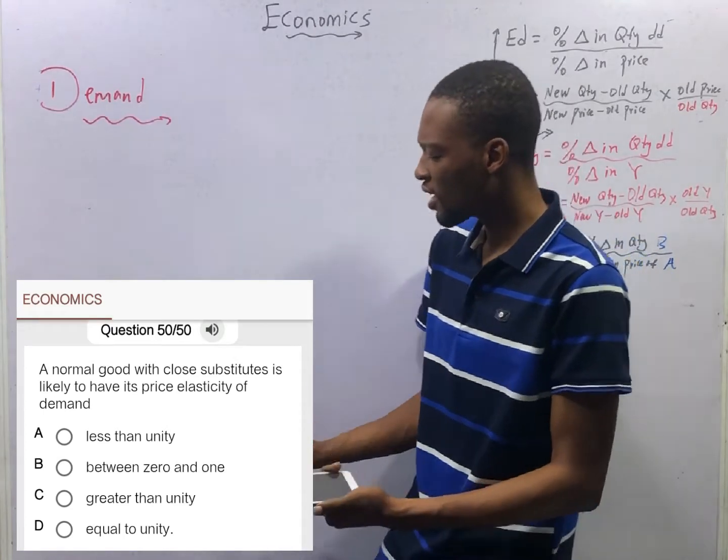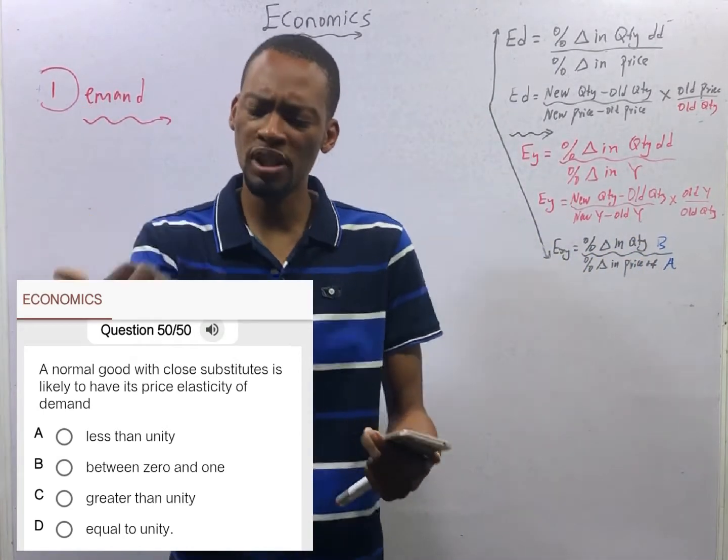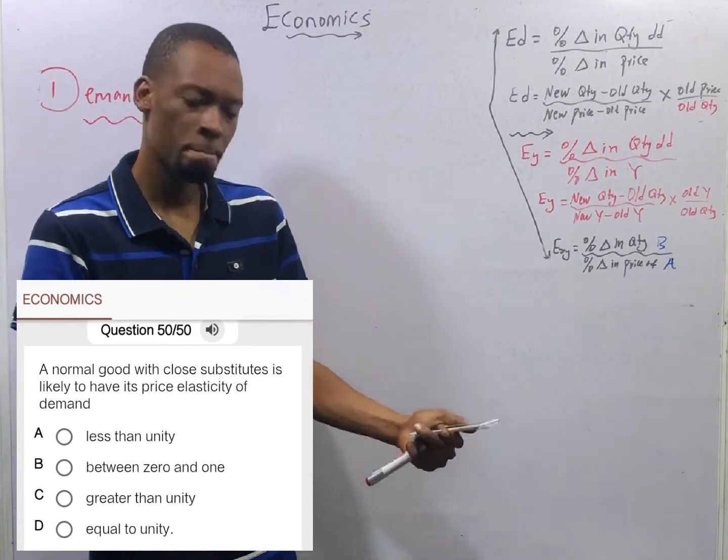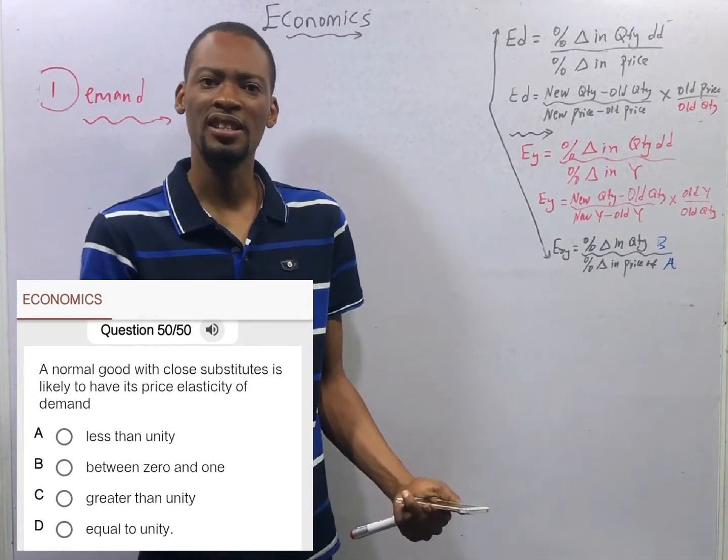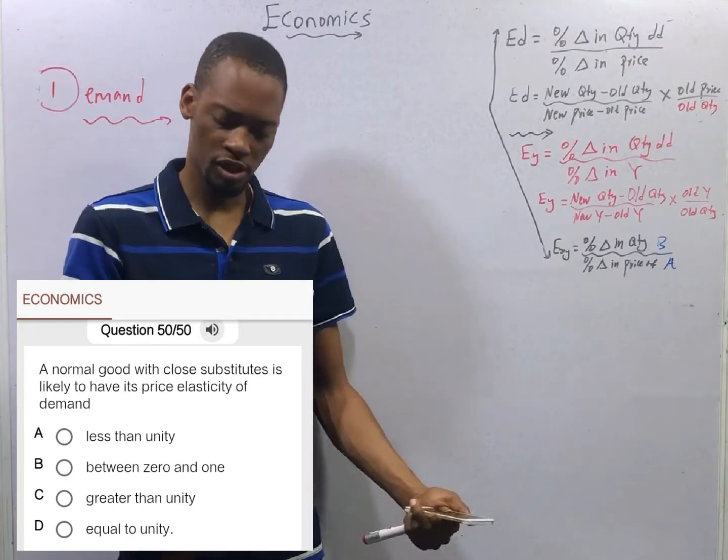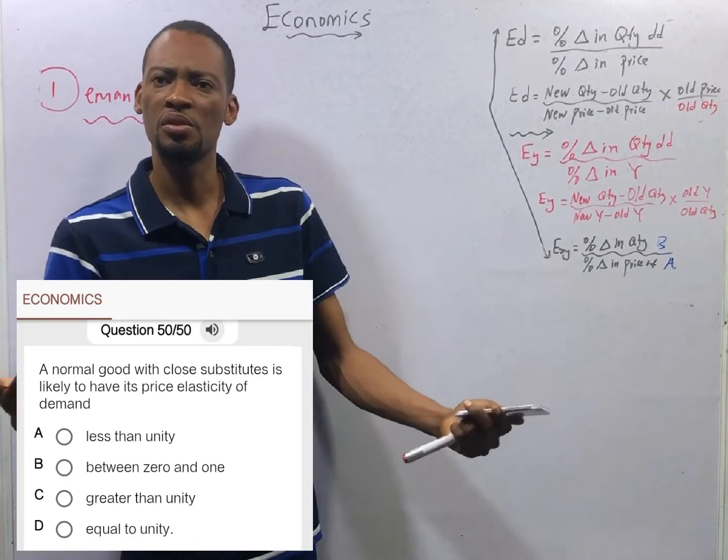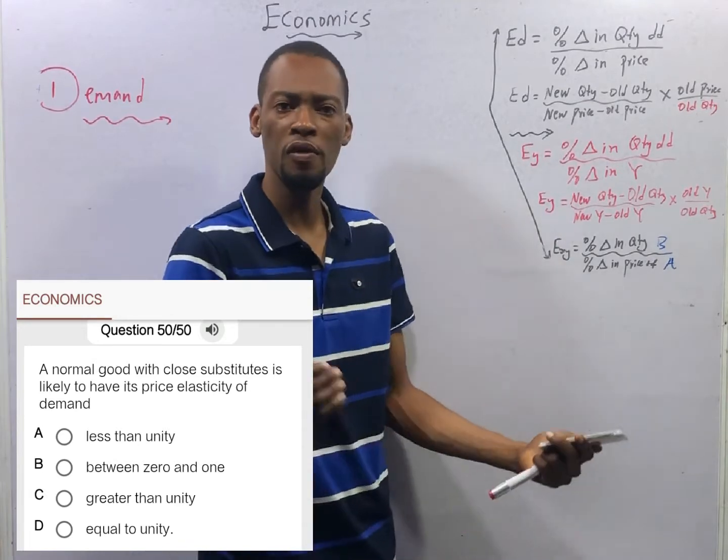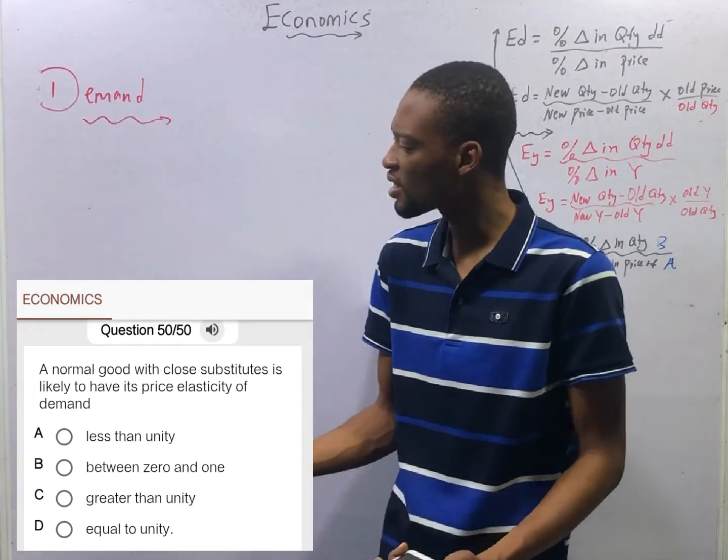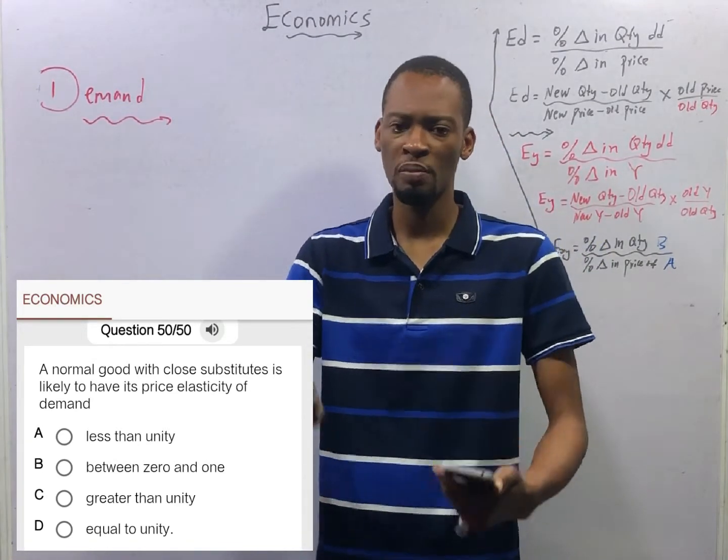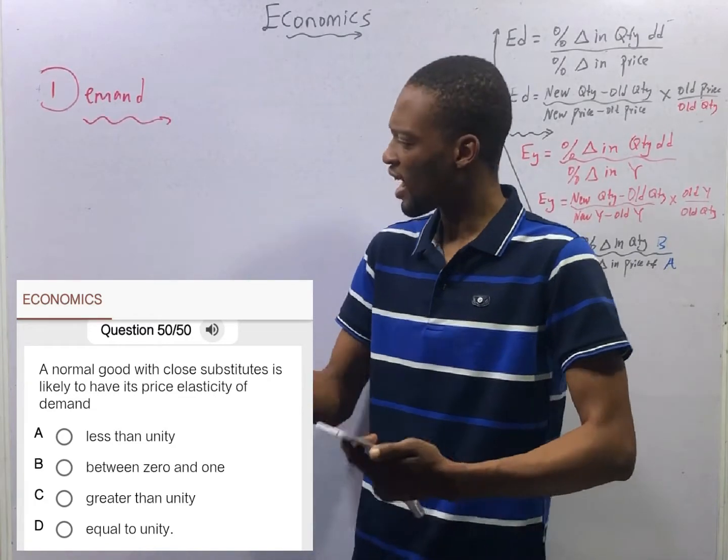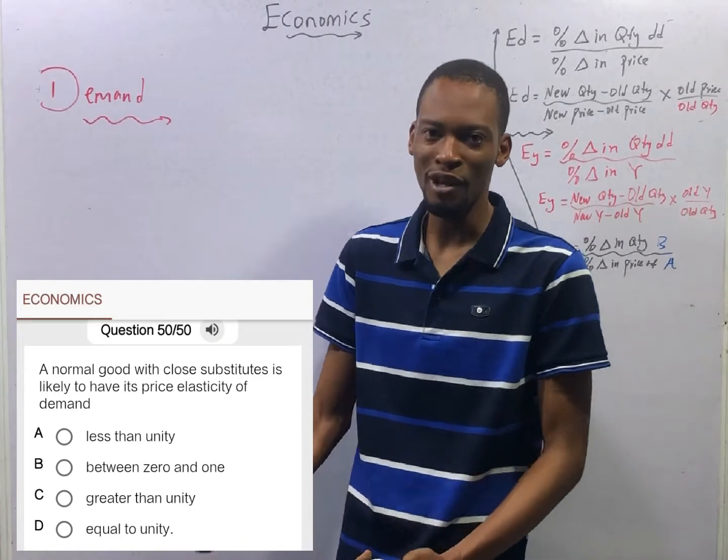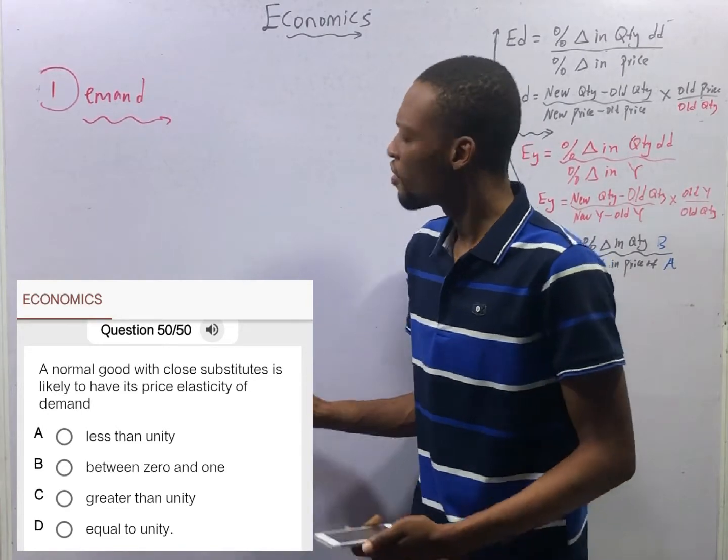The opposite of normal goods is inferior goods. For inferior goods, as your income increases, the quantity of goods that you buy will drop. For example, Okrika, Bendan Celeste. As your income reduces, you buy such things. Not bad. But as your income increases, you leave all those things. You begin to visit the boutique or buy branded clothes. Because all these ones are of higher quality and at least better than the ones people have used before that you are buying.